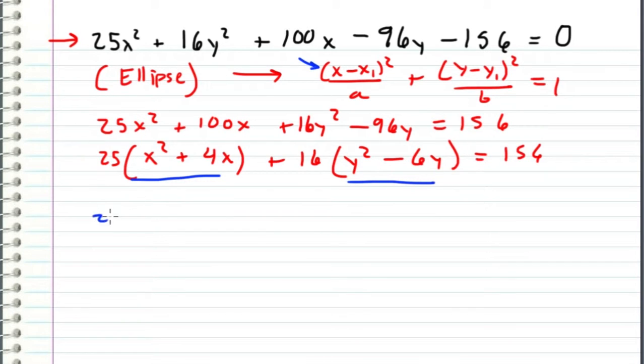So if I rewrite this equation as 25 times x squared plus 4x plus 4, and then I account for the addition of 100. So I have to subtract 100 because I added a 4 and it's being multiplied by 25.